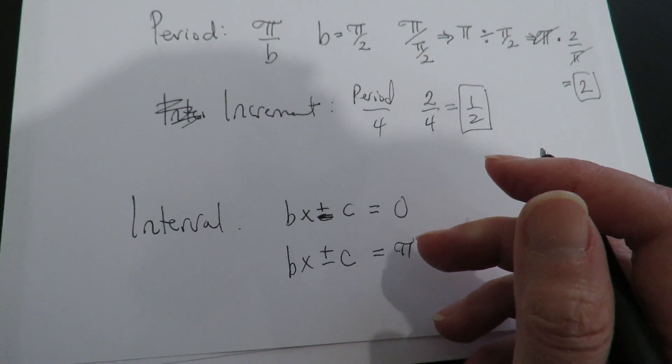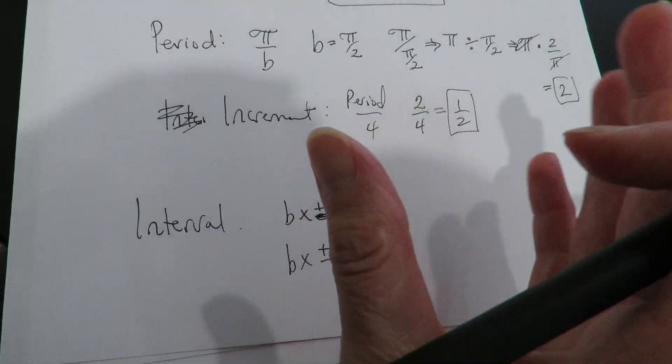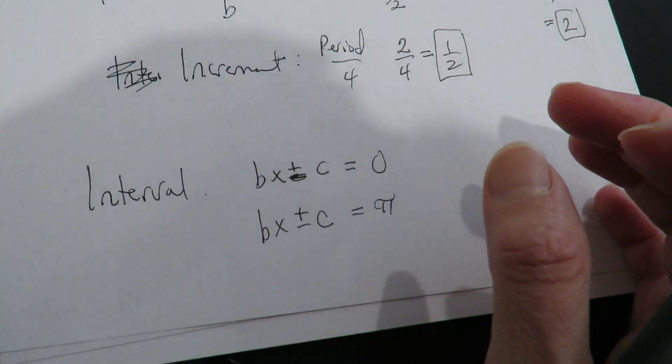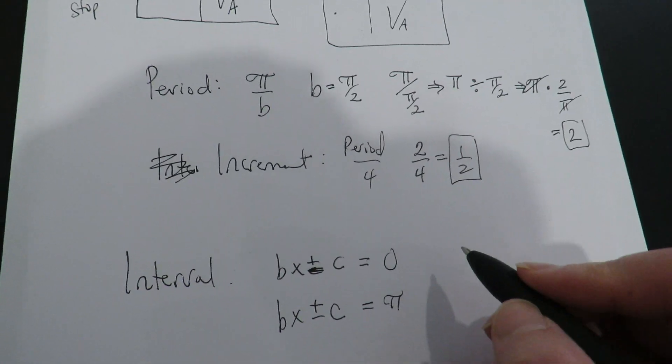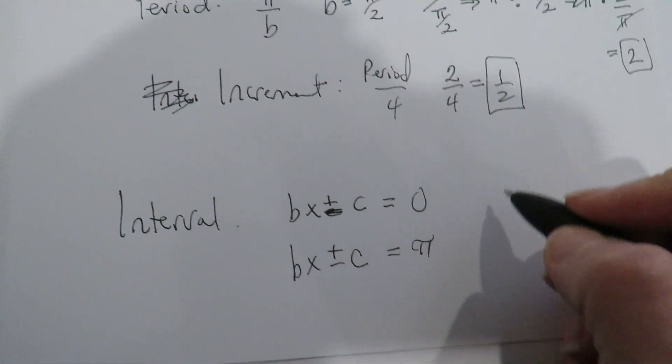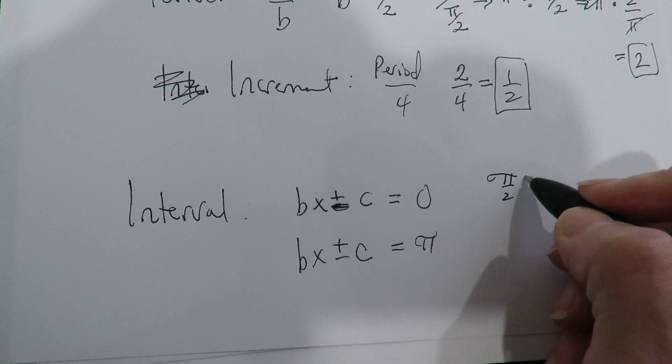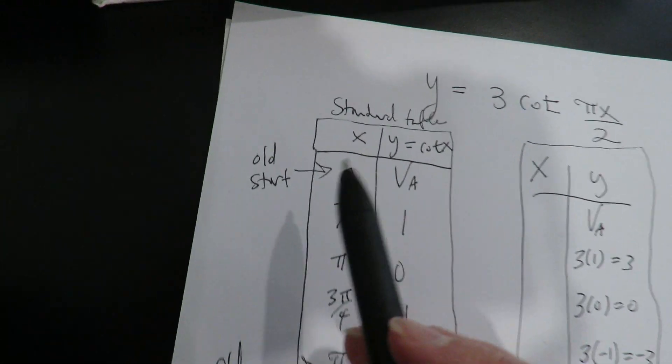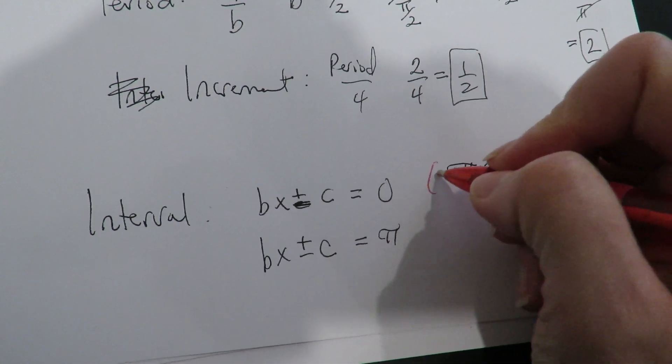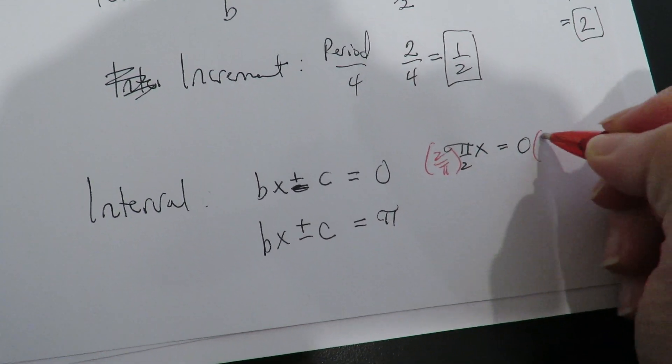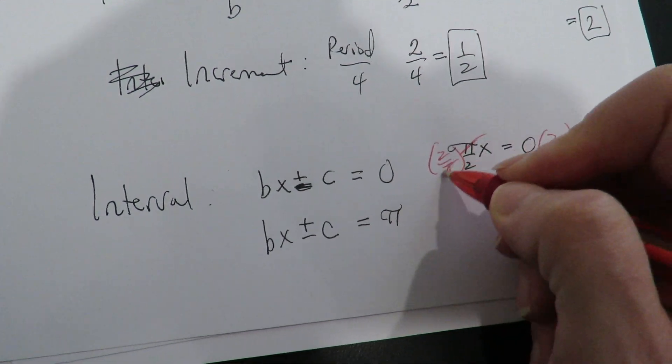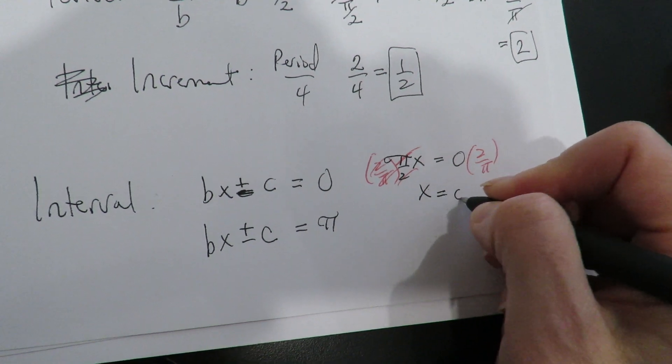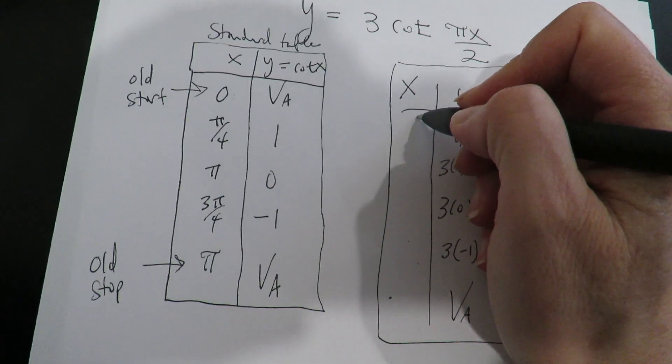So unlike the tangent, this function does not expand and collapse around the origin. So because this graph was not pushed left or right, it's still going to start at 0. If you want me to prove that to you, I will do that, but if this guy isn't pushed left or right, you don't have to do it. So the old start is 0. You would set it equal to old start. You would get rid of the pi over 2 by canceling it out. And then anything times 0 is 0. So it is still going to start at 0.